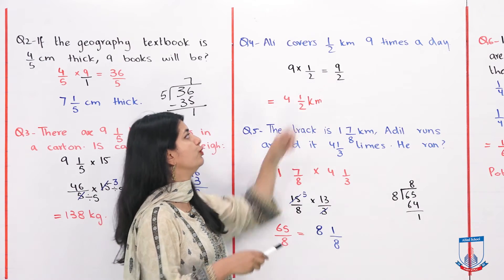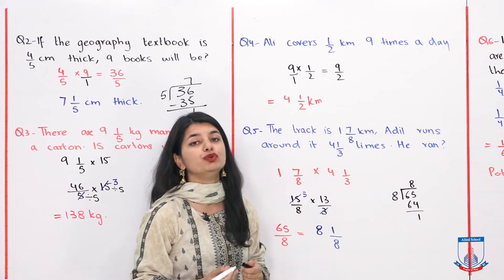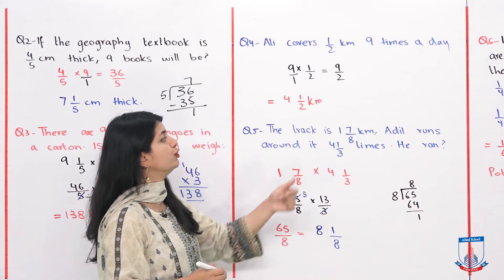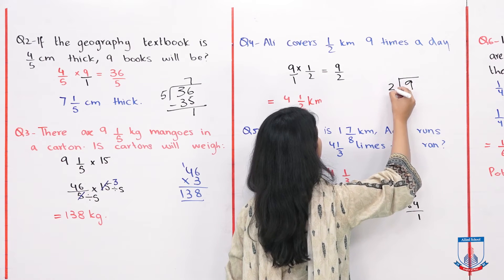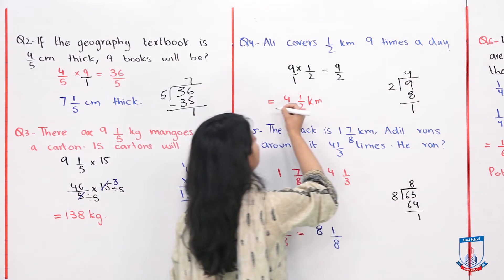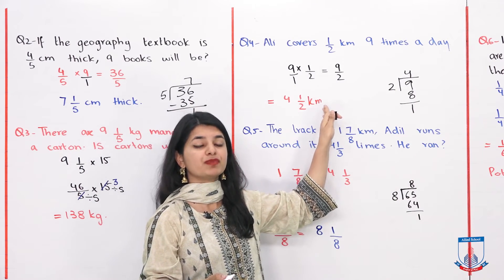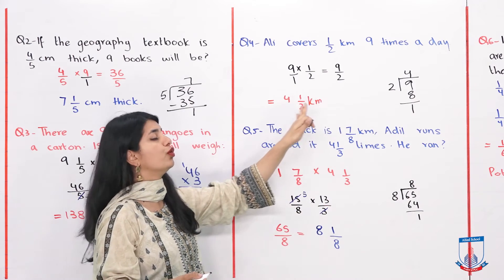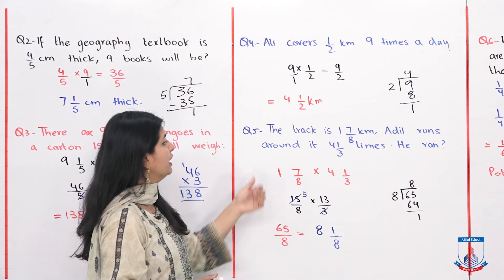When we multiply 9, 9 ones are 9. And with 2 we write 1 here, so 2 ones are 2. So 9 over 2 is your answer. By dividing, 9 divide by 2, 2 fours are 8, remainder 1. 4 is the whole number and 1 by 2 kilometers. So he runs a total of 4 whole 1 by 2 km in a day.